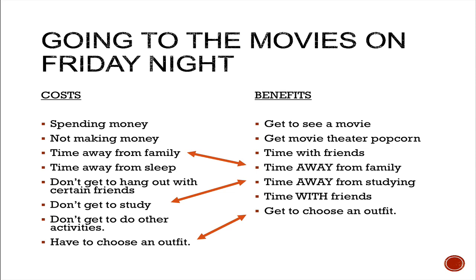The arrows there show that for any one person, one thing could be a cost, whereas for another person it could be a benefit. Time away from family, for example: for a young person who loves hanging out with their family and playing board games on Friday night, going to the movie might be a cost. But for someone who doesn't like hanging out with their family, going to the movie is a great benefit. Each economic player making a choice must create their own cost-benefit analysis based on their own criteria, which allows them to determine their choice and their trade-offs.